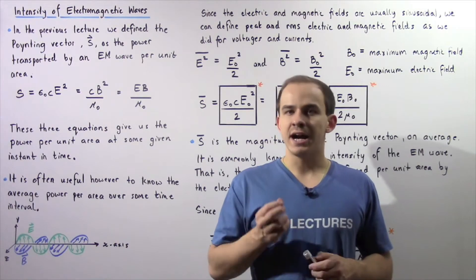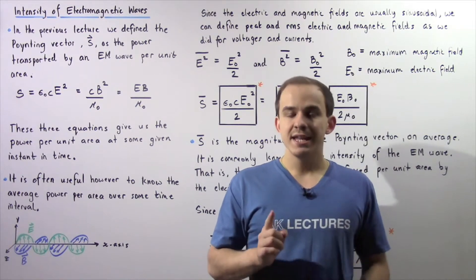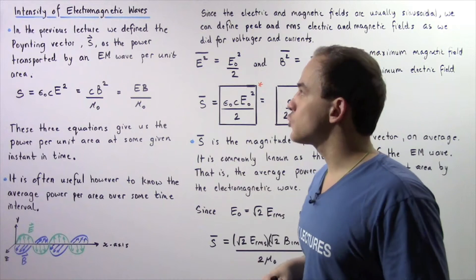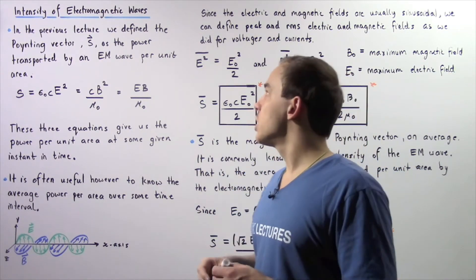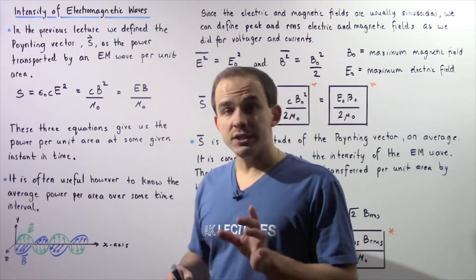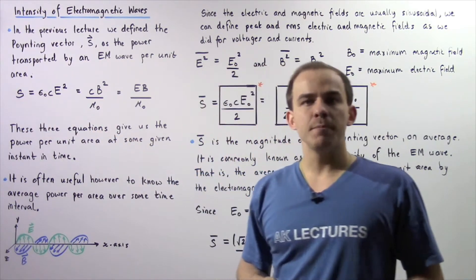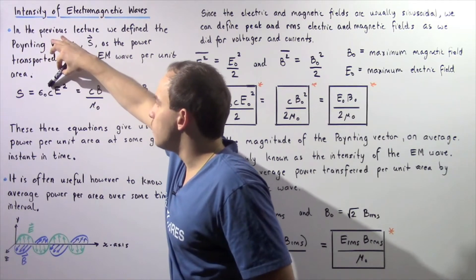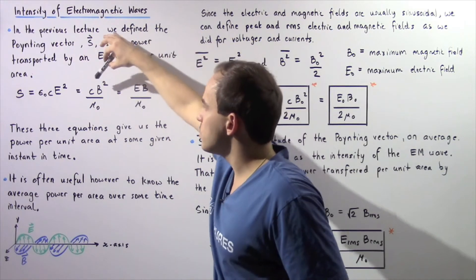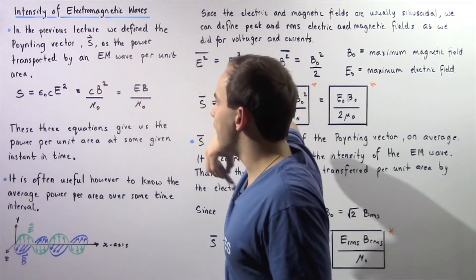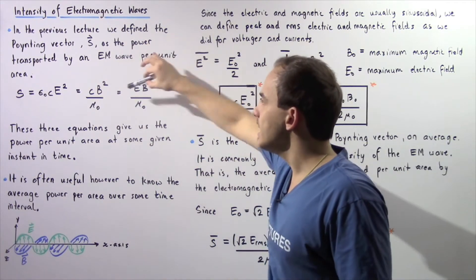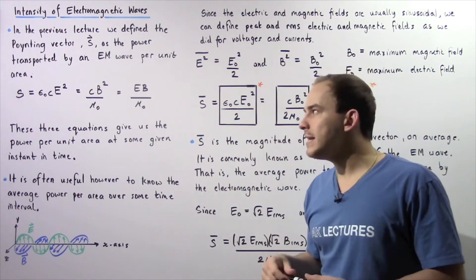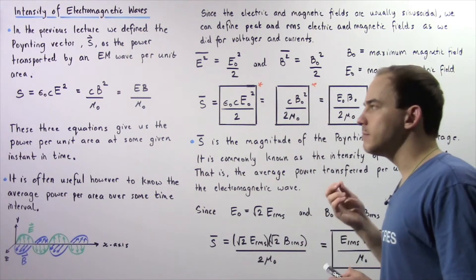In the previous lecture, we discussed a concept known as the Poynting vector. The Poynting vector, given by capital S, gives us the power per unit area that is transported by an electromagnetic wave as it propagates through empty space. We derived three different equations for the magnitude of the Poynting vector S: epsilon naught times C times E squared; C times B squared divided by mu naught; and E times B divided by mu naught, where mu naught, C, and epsilon naught are constants and E and B are the electric and magnetic fields at a given moment in time.